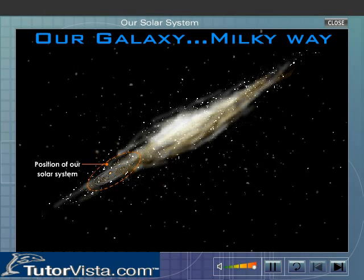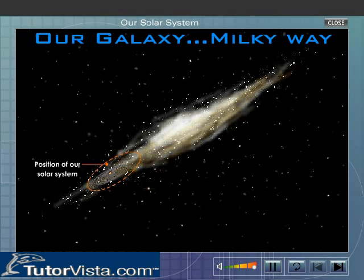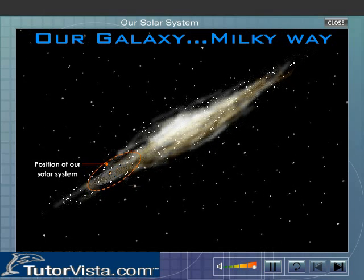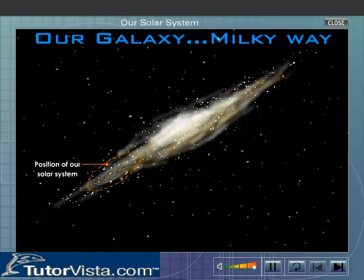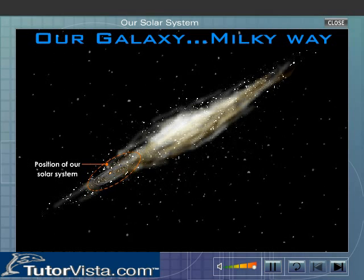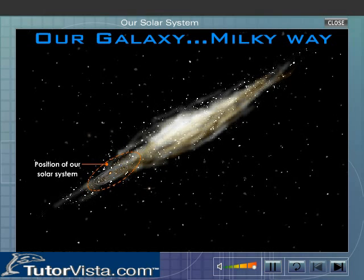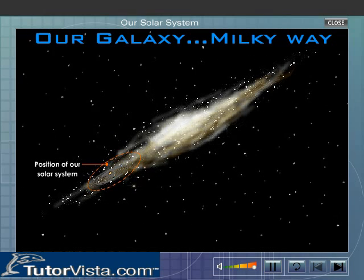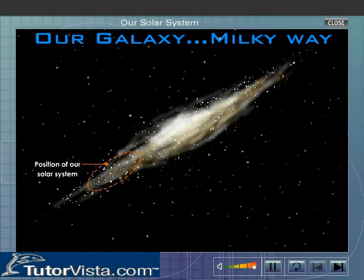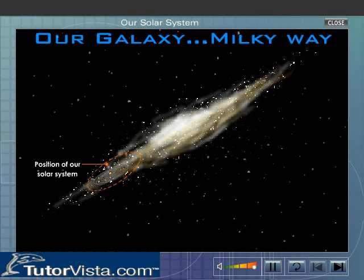The Milky Way, viewed through binoculars, is a magnificent sight, with thousands of stars in each field of view. The image was taken at the Anglo-Australian Observatory and shows the centre of the Milky Way in the constellation of Sagittarius.